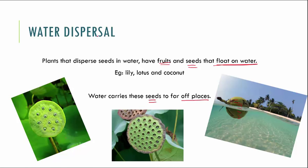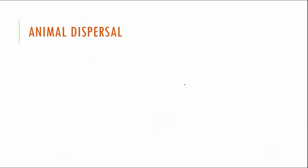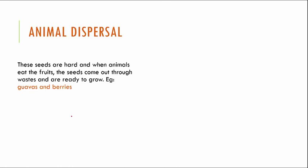The next one is animal dispersal. We all love eating fleshy fruits like mango, cherry and guava. After we eat these we throw away the seeds, which move to various places far from the mother plant. Similarly, seeds are generally hard, so when animals eat such fruits the seeds don't get digested — they come out through the waste and start growing into new plants. Examples for this are guavas and berries.